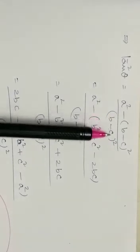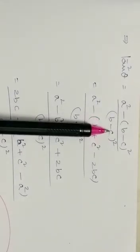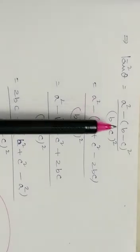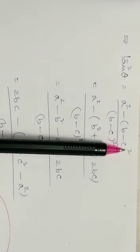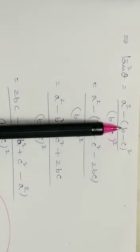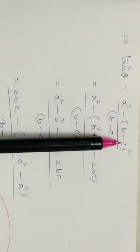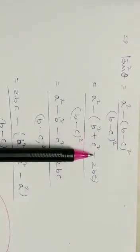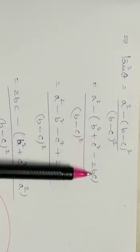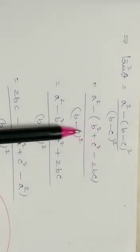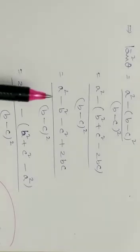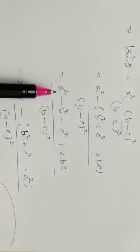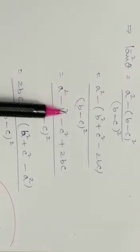Taking the LCM: tan squared theta equals [a squared minus (b minus c) whole squared] divided by (b minus c) whole squared. Now expanding a squared minus (b minus c) squared using the formula — (b minus c) squared equals b squared plus c squared minus 2bc — we get a squared minus b squared minus c squared plus 2bc, all over (b minus c) whole squared.